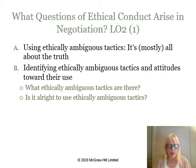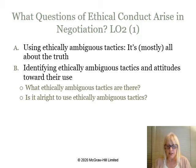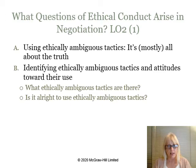Is it right to use ethically ambiguous tactics? Studies indicate there are tactically agreed-on rules of the game in negotiation. Some minor forms of untruth, misrepresentation of one's true position, bluffs, and emotional manipulations may be seen as ethically acceptable and within the rules. Outright deception and falsification are generally seen as outside the rules.